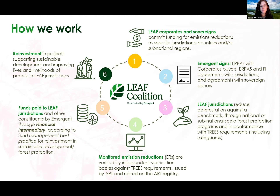Once TREES credits are issued, Emergent transfers funds to the LEAF jurisdiction that has entered into the purchase agreement and delivered the credits. We do that through a financial intermediary who oversees, monitors, and reports on the use of funds according to best management practices. Those funds ultimately end up being reinvested in sustainable development and forest protection — generally whatever the jurisdictions decide to use those funds for within that broad category. That reinvestment ultimately impacts the lives and livelihoods of people in those jurisdictions, creating a virtuous cycle where more emissions reductions can be achieved and more payments delivered.